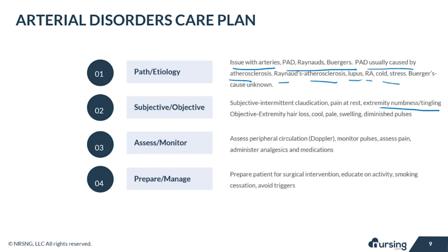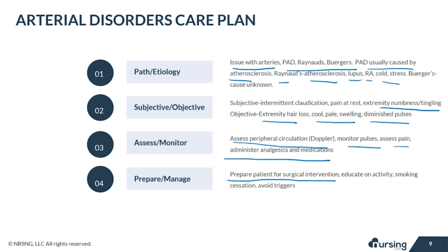Objective data includes extremity hair loss, cool, pale skin, swelling, and diminished pulses. Assess your patient's peripheral circulation — you may need a Doppler. Monitor pulses, assess their pain, and administer analgesics and also other medications when necessary. Prepare the patient for a surgical intervention if necessary. And also educate on activity, smoking cessation, and avoiding triggers.